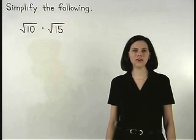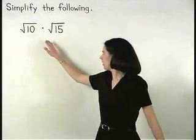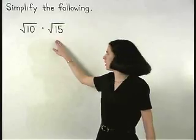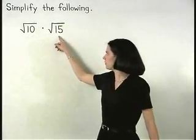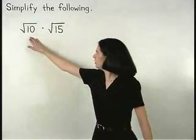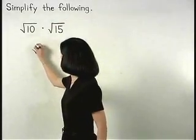To multiply two square roots together, such as the square root of 10 times the square root of 15, we simply multiply the numbers that are inside the square roots together. So root 10 times root 15 equals root 150.